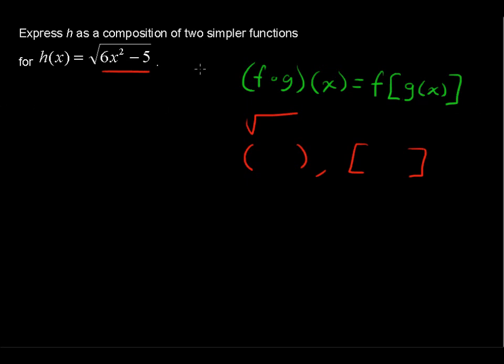I'm going to say that the inner part is g(x). So let g(x) = 6x² - 5.